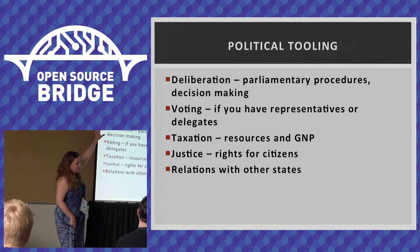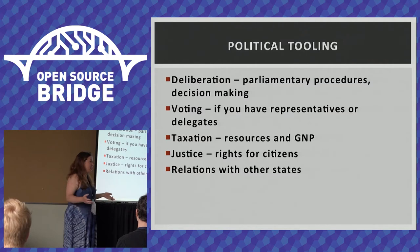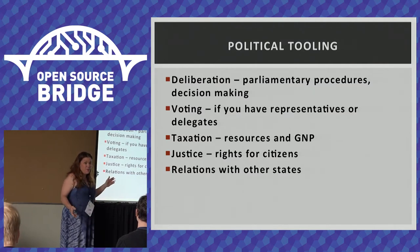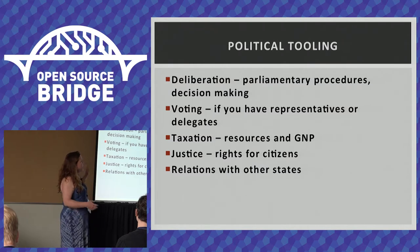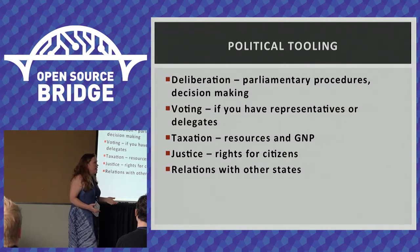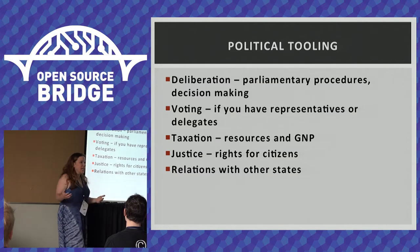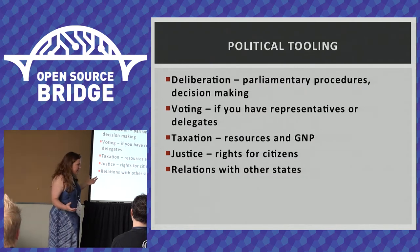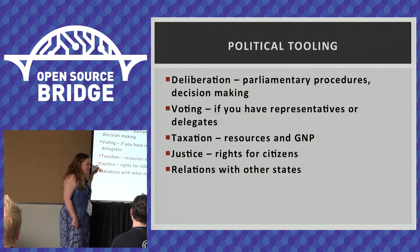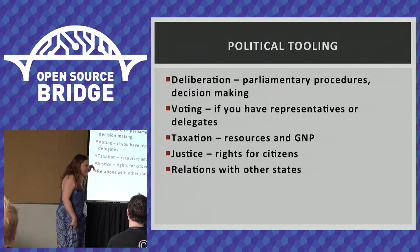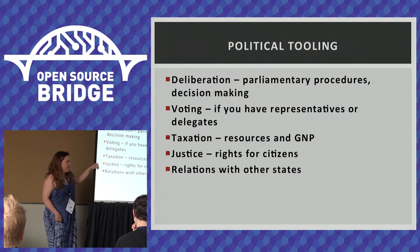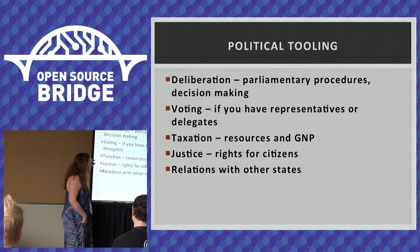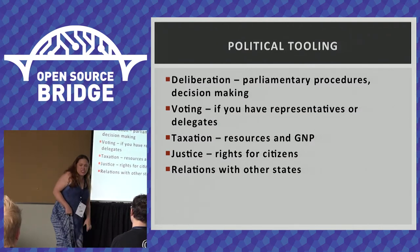One element of political tooling is deliberation — basically having a discussion and coming to a decision. Second is voting, whether representational democracy or some kind of voting system to handle decisions. Then there's taxation: how are we going to support our community? And justice, which is one of the trickiest things — a justice system is really important in government in the way it works with constitution and shapes the current experience of citizens and relationships with other states.